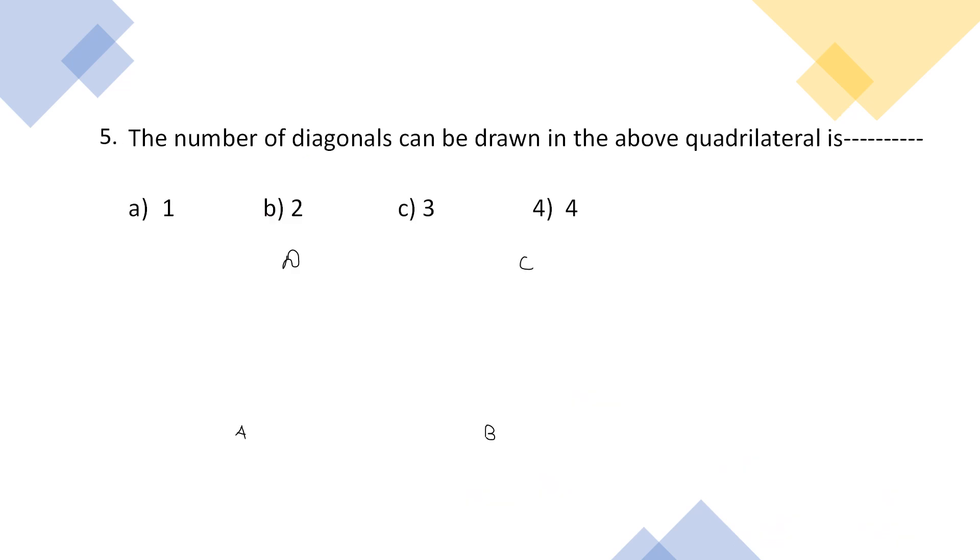We are moving to the fifth question. The number of diagonals that can be drawn in the above quadrilateral is 1, 2, 3, or 4. This was the quadrilateral, right? This is a parallelogram. Now, we were discussing number of diagonals. There is an equation for finding the diagonals of any polygon.